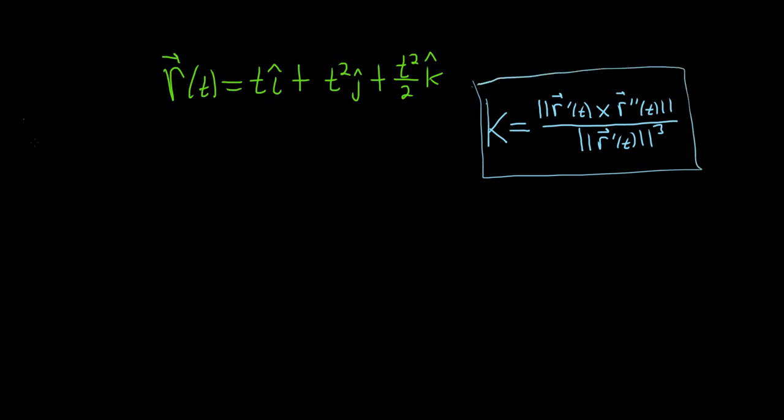Alright, let's go ahead and work through it. Before we do though, let me go ahead and write this in component form just to make it a little bit easier to work with. So the first component will be t, the second component will be t squared, and the third component is simply t squared over 2.